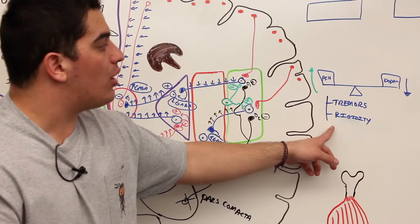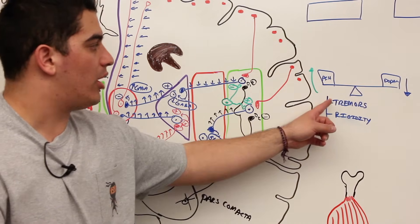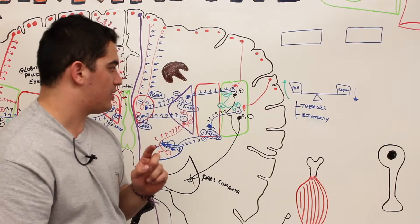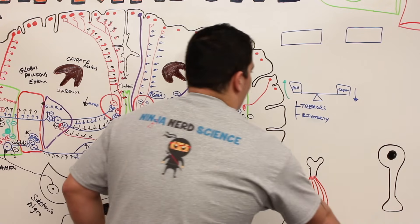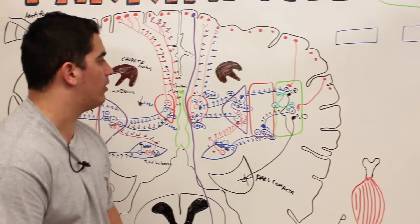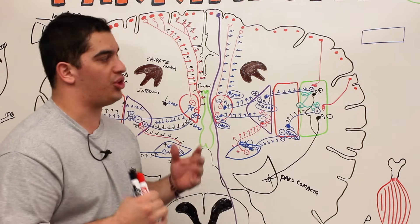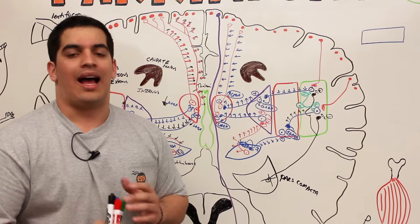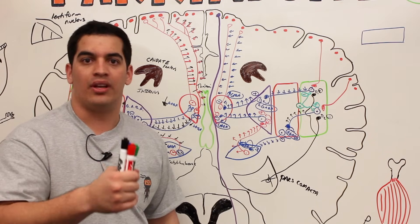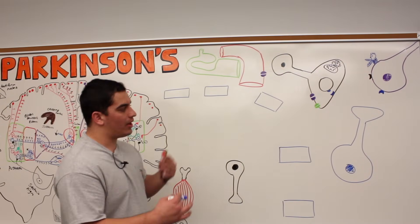Rigidity is also affected by the decrease in dopamine and increase in cholinergic effect. So tremors and rigidity are both driven by the imbalance between cholinergic and dopaminergic neurons. Now that we've covered the pathophysiology and neural mechanisms associated with Parkinson's disease, let's talk about some of the hypothetical or theoretical causes they believe can actually cause Parkinson's disease.